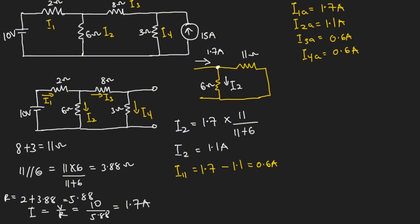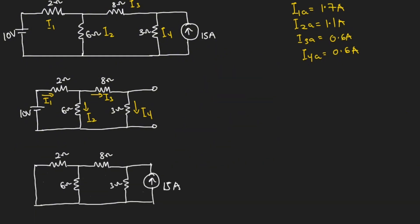Now let's consider the current source acting alone. I'm going to consider the 15 amperes acting alone. Looking at the direction of the currents: I4 is in this direction, I3 in this direction, I2 in this direction, and I1 in this direction. This is the circuit we have when considering the current source acting alone. You can see that we short-circuited the voltage source, so there is no voltage source in the circuit.